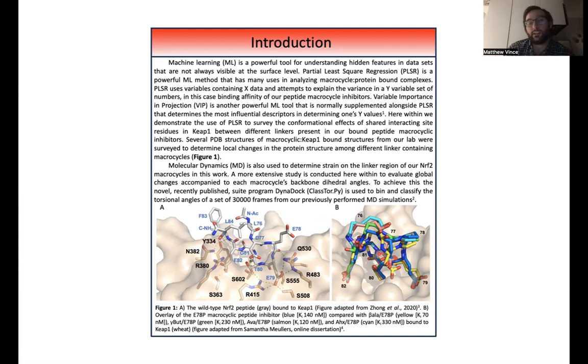In B, we can see some of our previously designed macrocyclic peptide inhibitors. And as you can see, there's a very good overlay of all these, or a very low RMSD value for most of these residues comparatively, until you get to the 76 region, and this is our linker region.